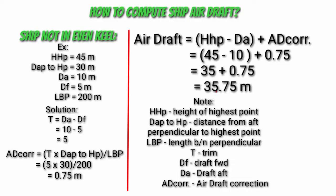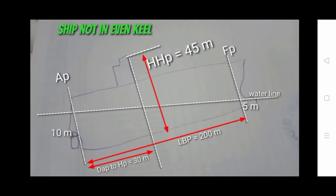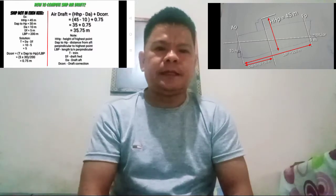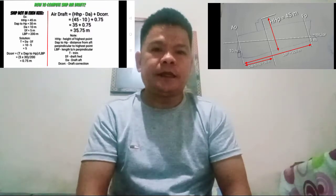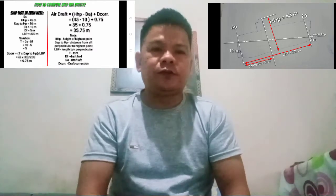Ito guys, tingnan natin. Kaya dito sa sunod na mayroong trim na natin. Pinakita ko na sa inyo ang pag-compute ng air draft na mayroong trim ang barko. Medyo complicated siya ng konti.